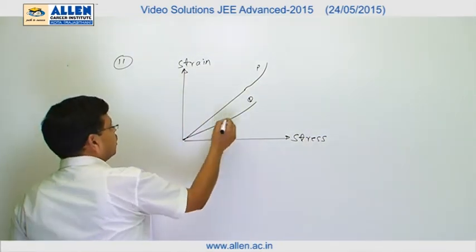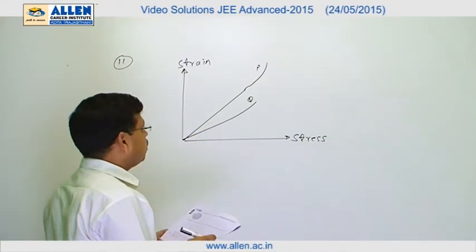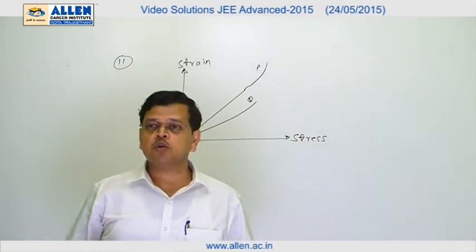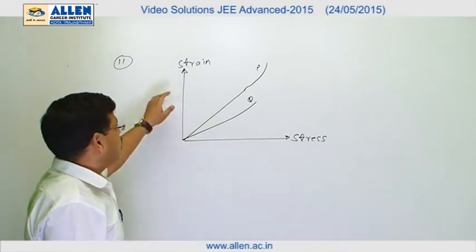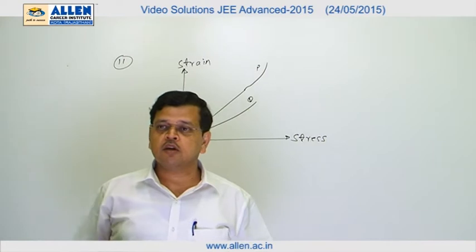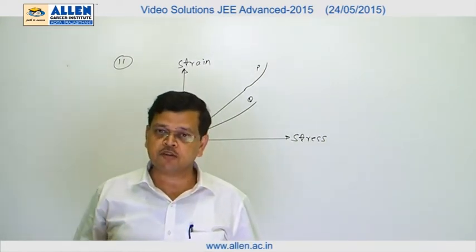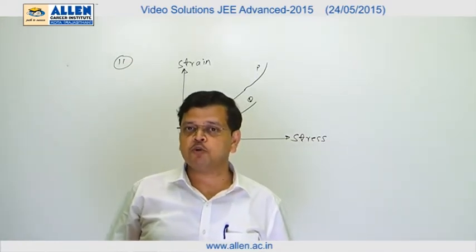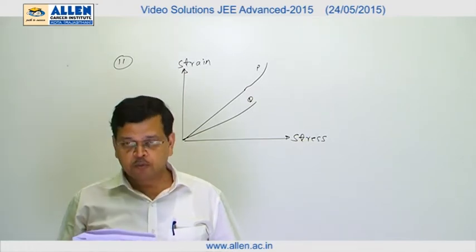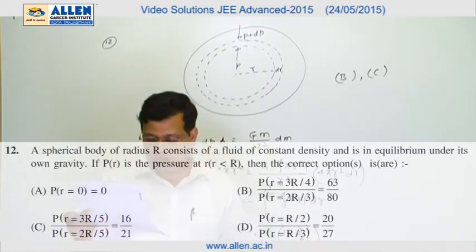The slope of curve P is more compared to Q. That means Young's modulus of P will be lesser than Young's modulus of Q, because here the graph is between strain and stress — not stress and strain. Had it been stress vs strain, the slope would directly give us Young's modulus. So the correct options are A and B.